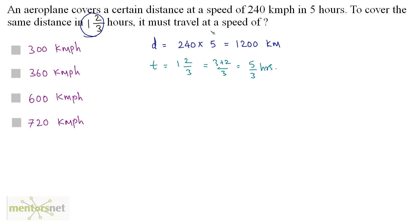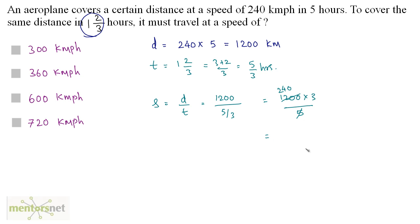You have been asked the speed. Speed is equal to distance upon time: 1200 km upon 5 by 3, so this is 1200 times 3 by 5, equal to 240 times 3, and that's 720. The unit of distance is kilometers and time is in hours, so the speed is 720 km per hour — option D.